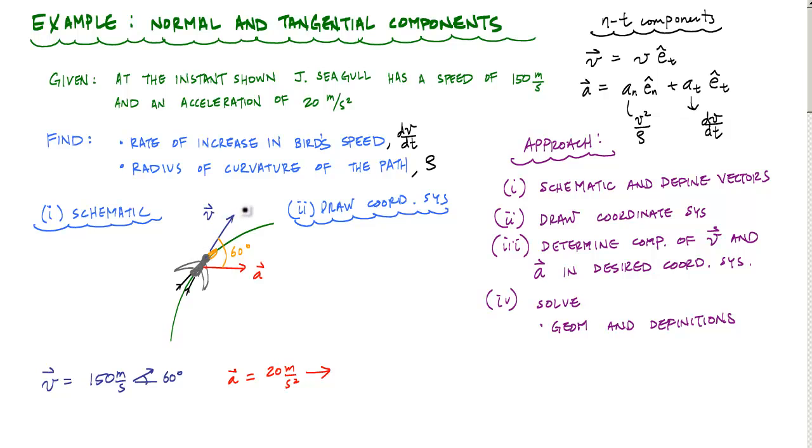Now, the velocity vector is important when we draw the coordinate system because in the n-t components, the tangential direction is parallel to the velocity, or it's tangent to the path. So our tangential direction will just be, bam, call this plus t. And then my normal direction will be towards the center of curvature, which in this case is 90 degrees from that tangential component, and going this way.